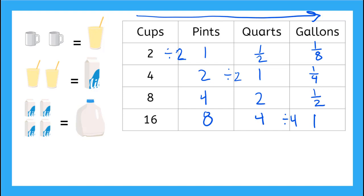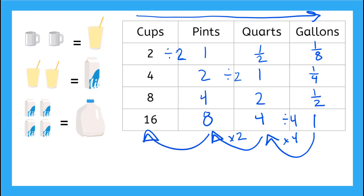But if we're going to go the other way — from gallons to quarts — we would have to multiply by four. So one gallon is equal to four quarts. Now if I have four quarts and I'm going to pints, four quarts is equal to eight pints, so four quarts times two tells me how many pints I have. And if I'm going from pints to cups, eight pints is equal to 16 cups, so I multiply by two again.